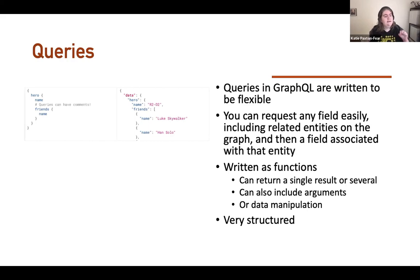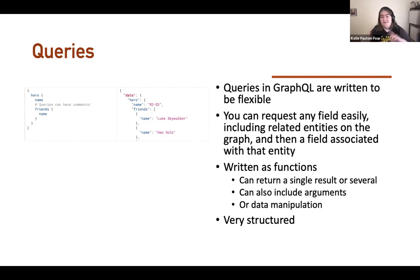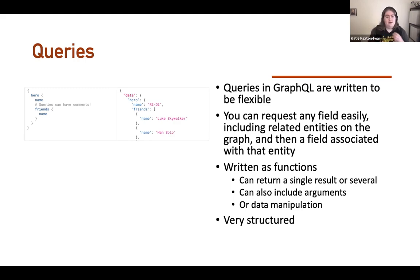Queries in GraphQL are written to be flexible — very, very flexible. On the developer side you write queries. You can request any field easily, including related entities on the graph and fields associated with that entity. They're written like functions, similar to how you might write a PHP function. You can return a single result or several, and include arguments or data manipulation. They're very structured.